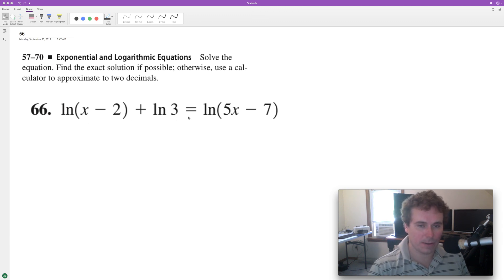We got the natural log and need to combine on the left. When you add logarithms, you multiply what's inside together. They have the same base, so we'll have natural log of three times x minus two, giving us 3x minus 6.